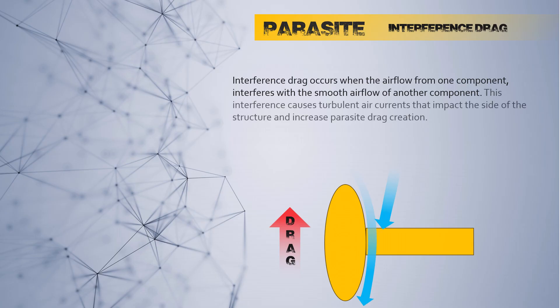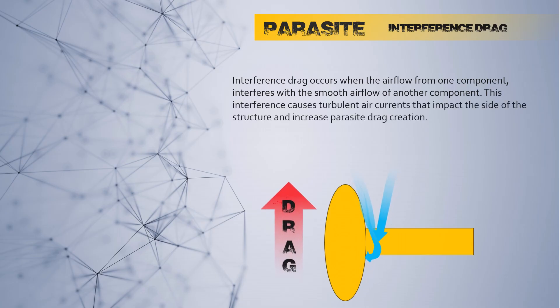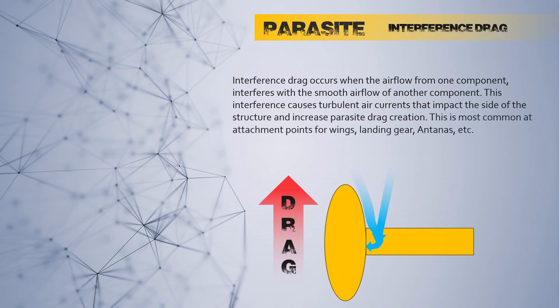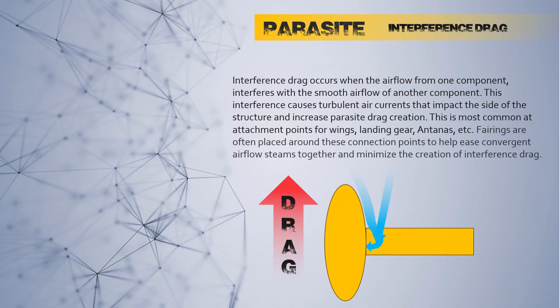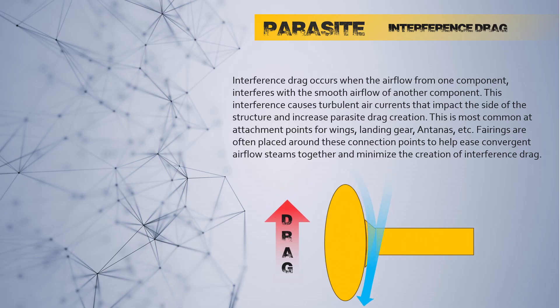This interference causes turbulent air currents that impact the side of the structure and increase parasite drag creation. This is most common at attachment points for wings, landing gear, antennas, etc. Fairings are often placed around these connection points to help ease convergent airflow streams together and minimize the creation of interference drag.